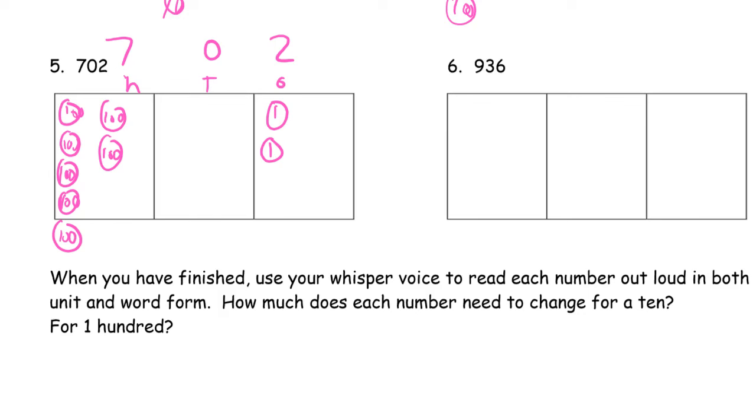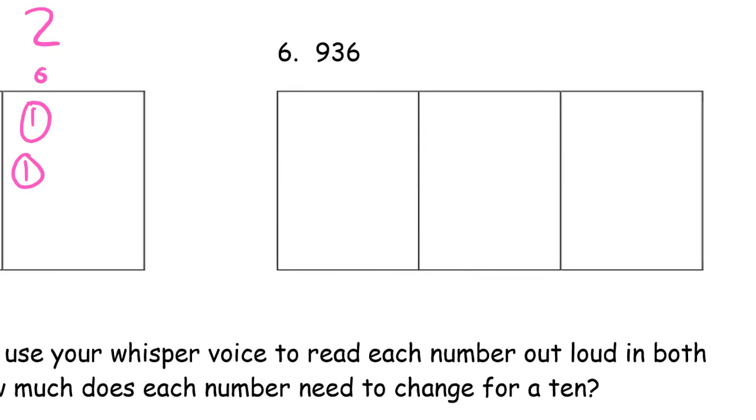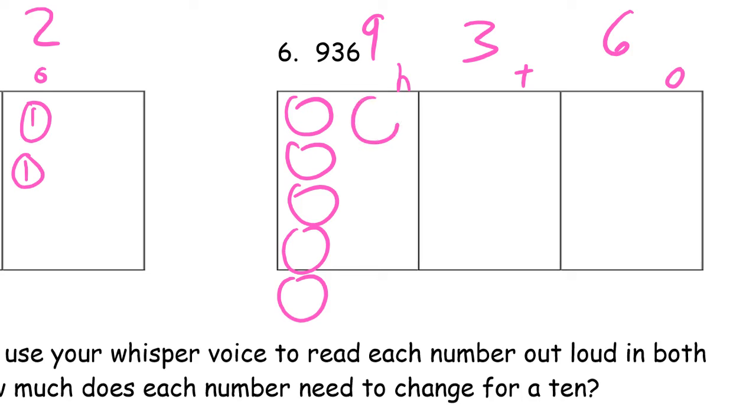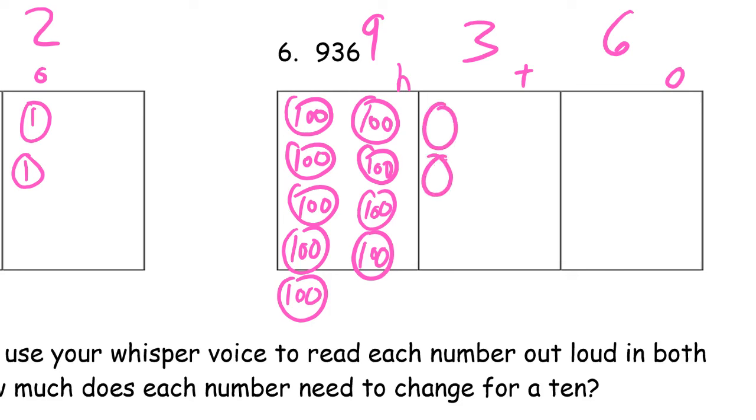And now we're looking at 936, trying to make this even bigger. We have H, this is the tens, and this is the ones. We need 936, so we need nine hundreds, one, two, three, four, five, six, seven, eight, nine. There's my nine hundreds. I need three tens, one, two, three, and we need six ones, one, two, three, four, five, six. 936.